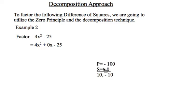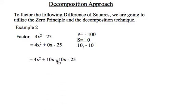I can then do my product and sum. So I look for two numbers that multiply for negative 100 and sum for 0. Those two numbers are 10 and negative 10. I decompose the middle term right there.